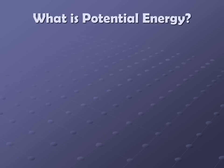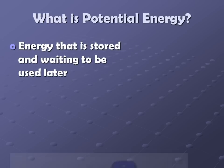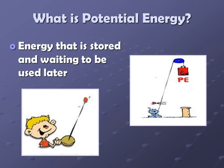Now we start looking at what is potential energy. The thing we got to keep in mind is it's energy that is stored and it's waiting to be used later. The easiest example is if you look at the weight — the weight is hanging from the pulley system. It's not moving yet. It's just stored up, it's ready to fall. It has the potential to fall, but it hasn't happened yet. It's stored energy.